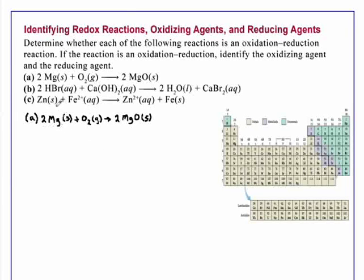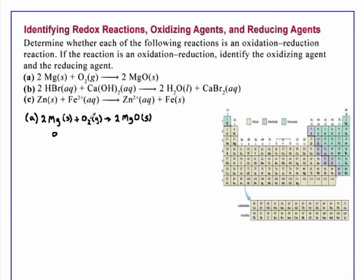Remember, for an element that is uncombined, such as magnesium, the oxidation number is zero. For oxygen, we have two oxygen atoms bonded together to make the molecule, but there is no other element, so it also has an oxidation number of zero.